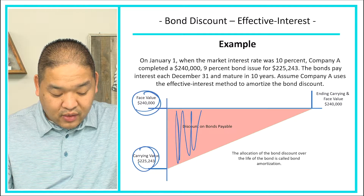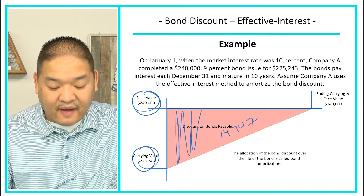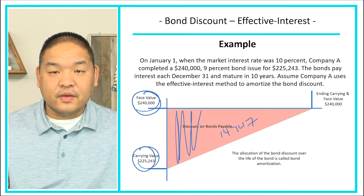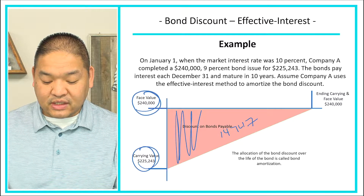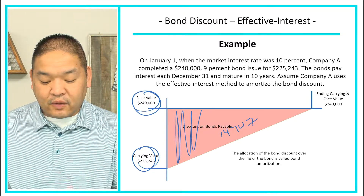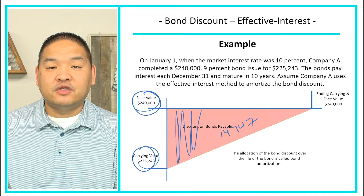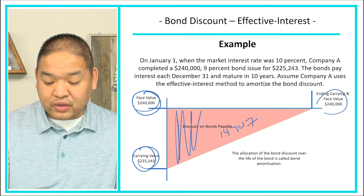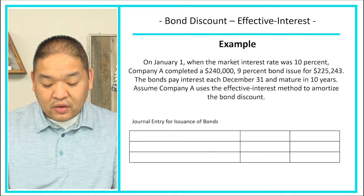The discount is $14,747 — that's the difference between the $240,000 face value and the $225,243 issued price — and we're going to have to allocate that over the useful life of the bond using the effective interest method. That $14,747 represents additional interest expense we'll accrue so the bond's carrying value can reach $240,000 in 10 years.